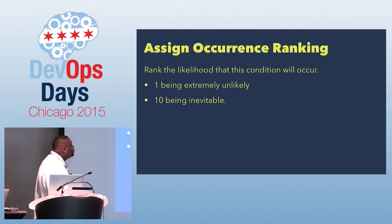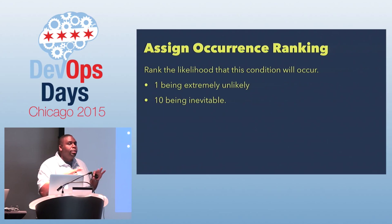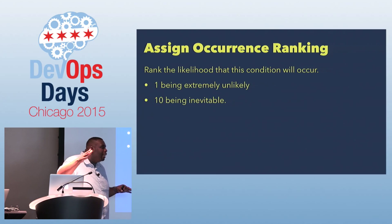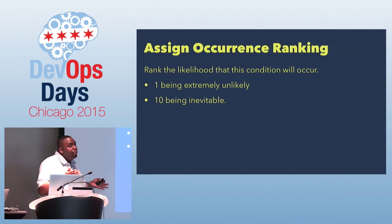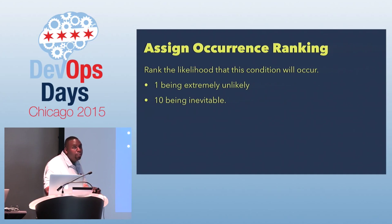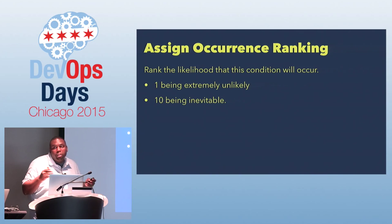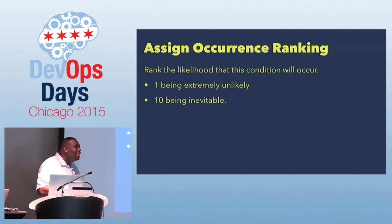Then we move to the occurrence ranking, which basically details how likely is this thing to occur. One being extremely unlikely — the moonwalking dude scenario. A 10 is something like garbage data — someone's going to give us garbage data eventually, it's going to happen. So we might give the database failing a 5, because it could happen. Has anybody had a database failure this week? Yeah, so we'll give it a 5.